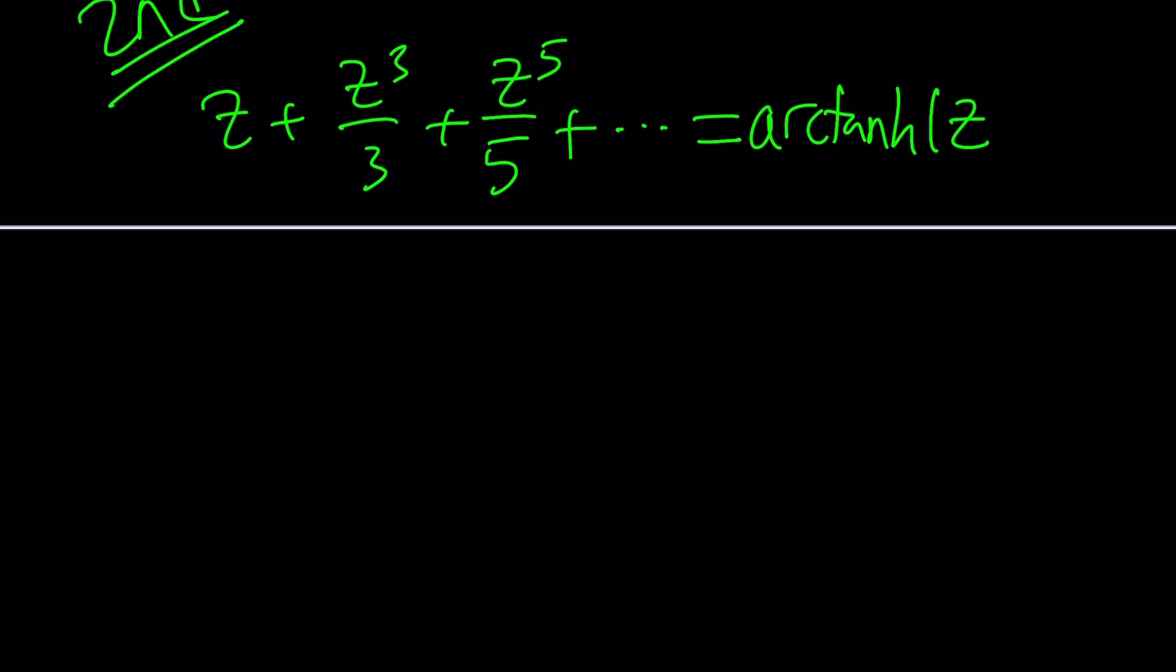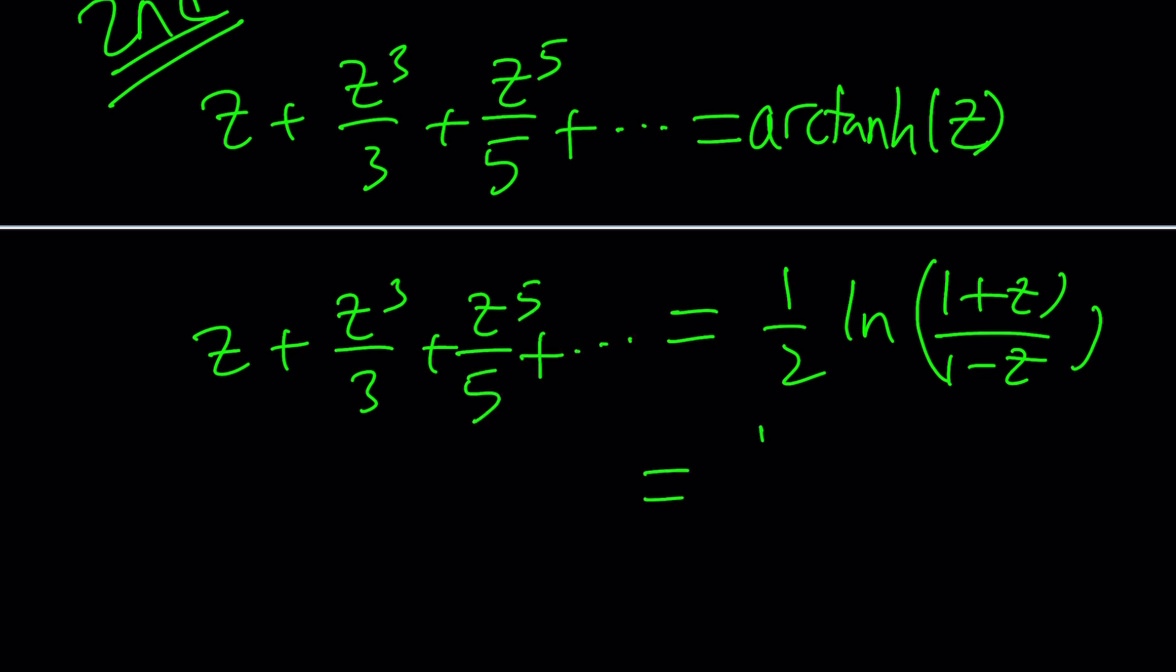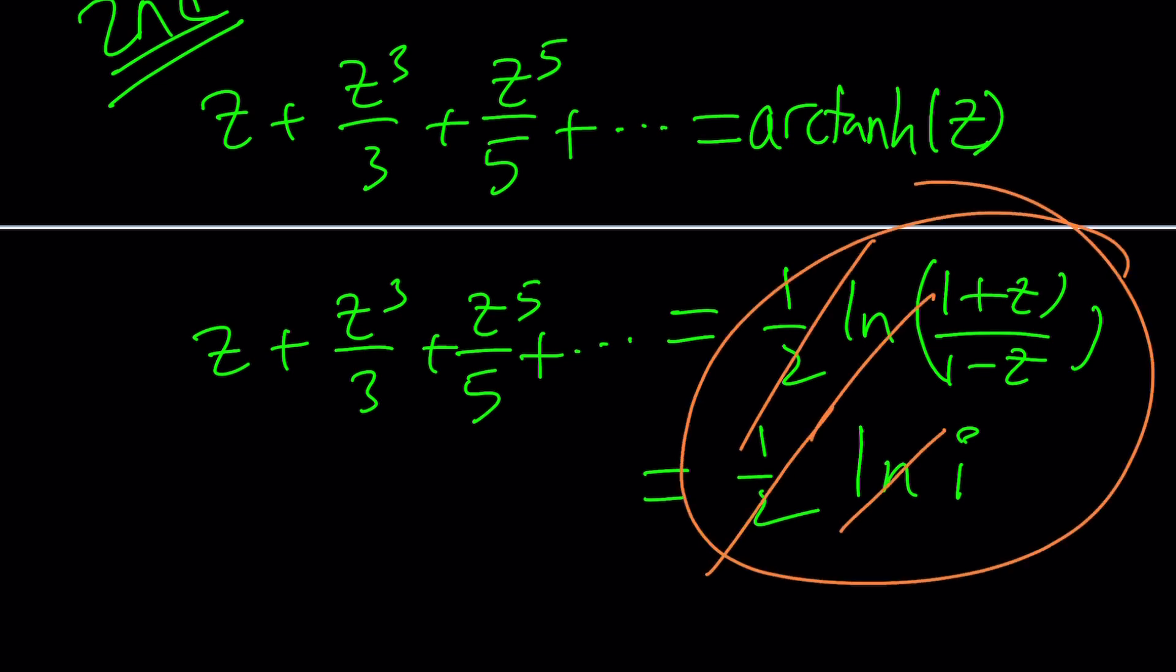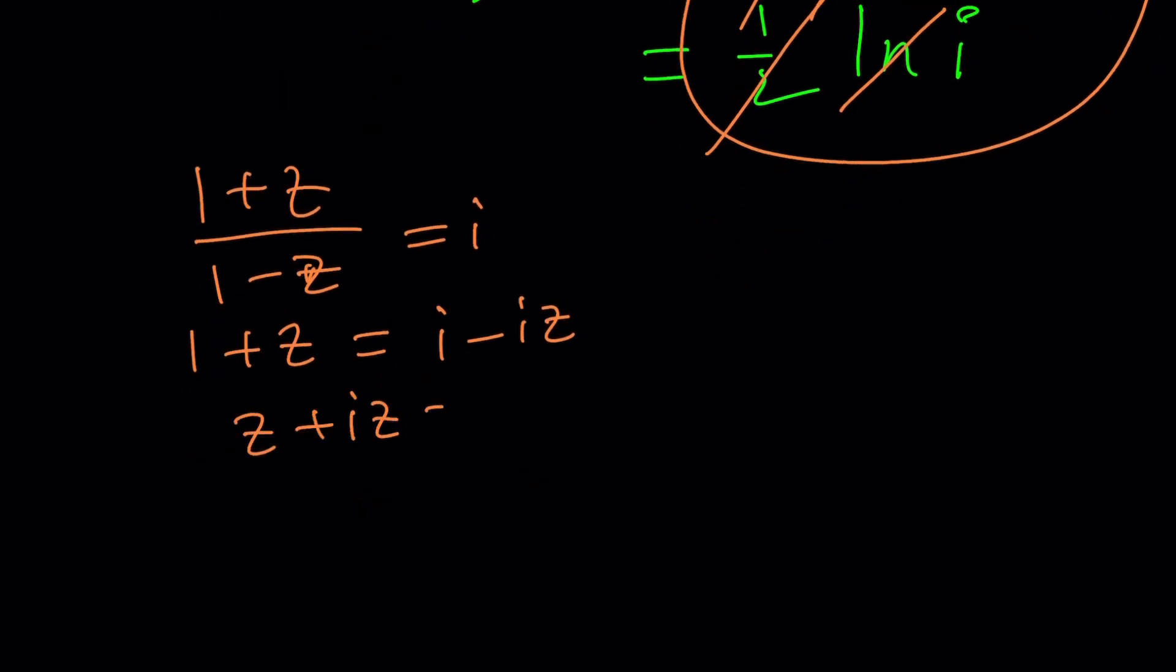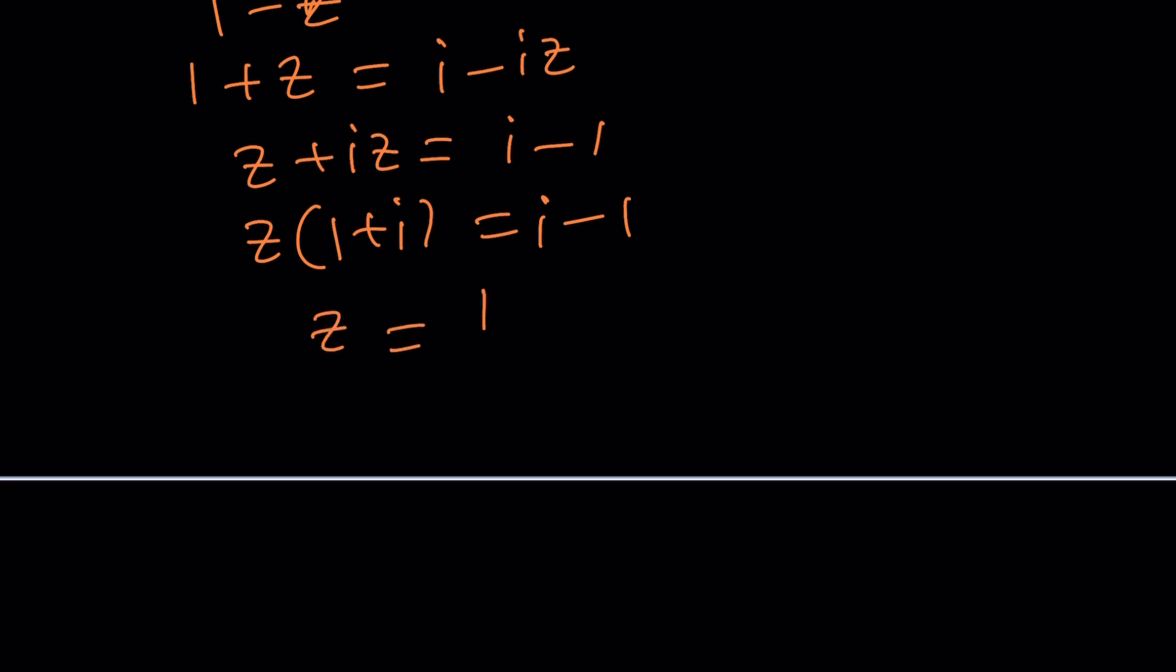That equals one half ln (1 + z) divided by (1 - z). So our series is equivalent to that and we are given that this equals one half ln i. These two things are equal, one half cancels, ln cancels, this needs to be i. So 1 + z equals i minus iz. Bring the iz and z together: z + iz equals i - 1. z times (1 + i) equals i - 1, then z equals (i - 1) divided by (1 + i). Multiply by (1 - i) over (1 - i) and you get 2i divided by 2 which is i. So z equals i.